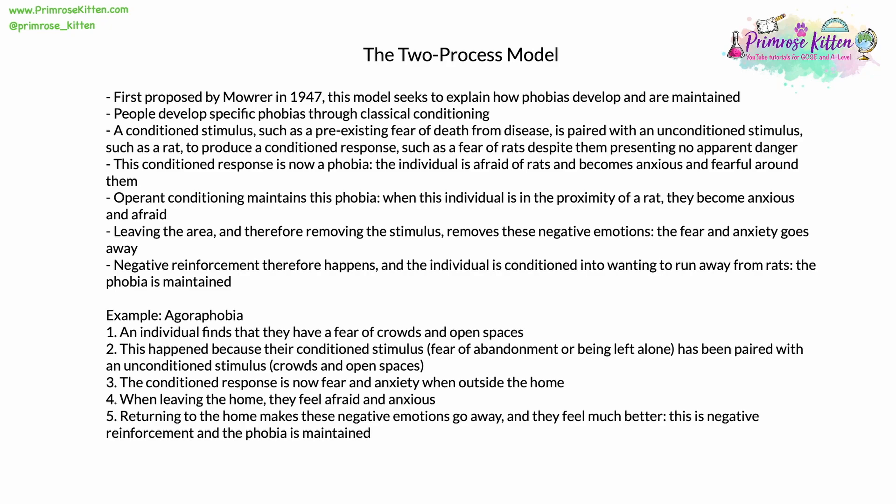Let's take an example of the two-process model and look at agoraphobia. An individual finds that they have a fear of crowds and open spaces — the classic symptoms of agoraphobia. This happened because their conditioned stimulus, a perfectly rational fear of abandonment or fear of being alone, which had been programmed in by evolution, has been paired with an unconditioned, less rational stimulus: crowds and open spaces filled with people. The conditioned response is therefore now fear and anxiety when outside the home. When leaving the home they feel very afraid and anxious. But when they return home, these negative emotions go away. This is negative reinforcement, and the phobia is maintained again and again.